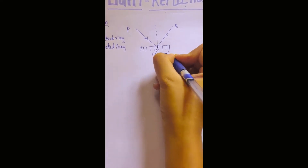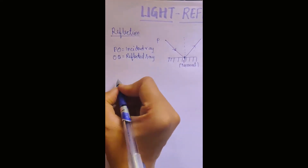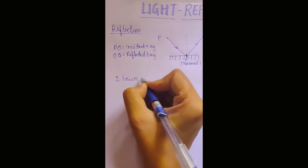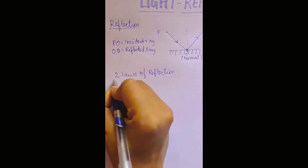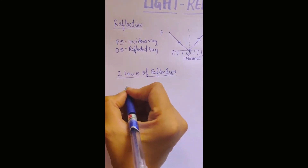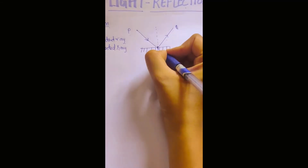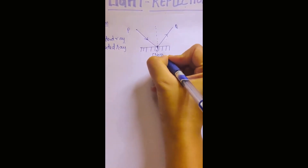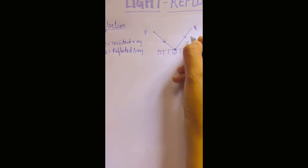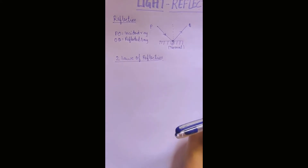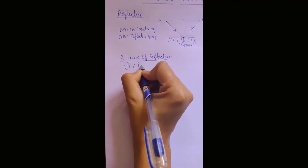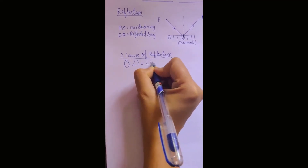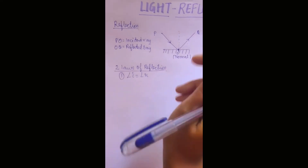There are two laws of reflection. The first law of reflection states that the angle of incidence is equal to the angle of reflection.